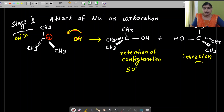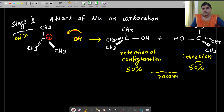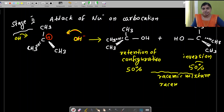There is a 50% chance for retention and 50% chance for inversion of configuration. When equal amounts of inverted and retained forms are produced, the mixture is called a racemic mixture. This phenomenon is called racemization.